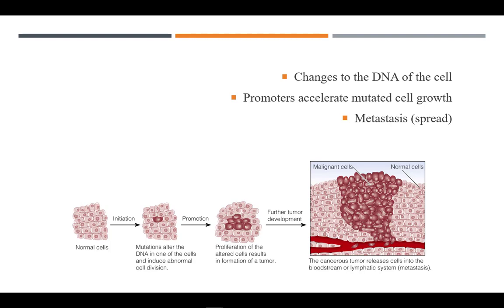Cancer begins with the initiation of a carcinogen or other type of factor entering cells and altering the DNA. The now modified DNA will produce mutated daughter cells. The changes that occur to the DNA can also affect the cell's ability to stop production of new cells, causing mutated cells to grow rapidly.